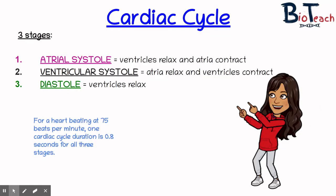The heart pumps with alternate contractions and relaxations. The contractions are called systole and the relaxations are known as diastole. The heartbeat occurs in a cycle involving three stages: atrial systole, ventricular systole, and complete diastole. This rhythmic sequence of contractions and relaxations keeps blood continually circulating around the body.